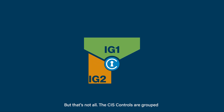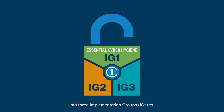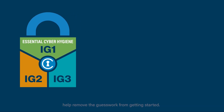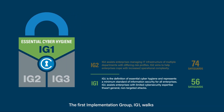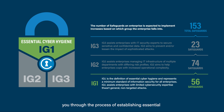The CIS controls are grouped into three implementation groups, or IGs, to help remove the guesswork from getting started. The first implementation group, IG1, walks you through the process of establishing essential cyber hygiene as a foundation.